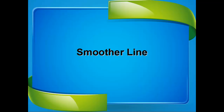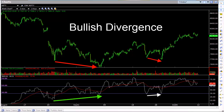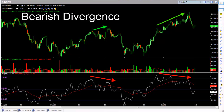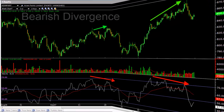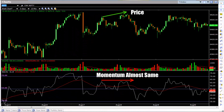A price strength indicator crossing the smoother line doesn't guarantee a change in momentum — it just confirms weakness in the current price strength. Now, divergences. Divergences occur when the rate at which price changes slows down, and they actually show weakness in the current trend. During a downtrend, we say a bullish divergence has occurred when prices keep falling but momentum starts recovering. Bullish divergence usually marks a slowing down of bearishness, and a confirmation is always required. During an uptrend, we say a bearish divergence has occurred when prices keep rising but momentum starts falling. Clean and unclean are two types of divergences. A clean divergence is one where the divergence is clearly visible, while unclean ones are those where you find yourself confused about whether a divergence happened or not. For example, look at the chart on screen where you can see price went up but momentum showed almost no change — this kind of scenario is very confusing.